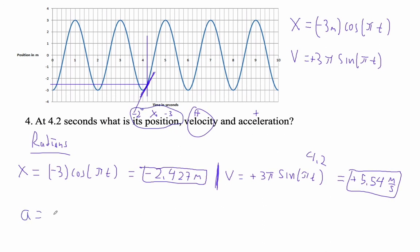Acceleration is just simply going to be the opposite of omega squared times x, right? So the opposite of omega is just pi, so pi squared times our x, which is negative 2.427. So I'm going to go opposite of parenthesis pi squared times my,